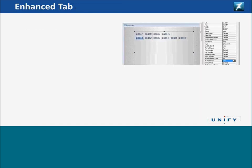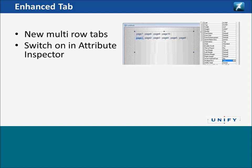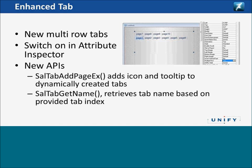The enhanced tab control allows multiple rows of tabs on a control, which you switch on in the attribute inspector. Two new APIs have been added — both requested on the forums. SaalTabAddPageX adds an icon and tooltip to a dynamically created tab page at runtime. SaalTabGetName allows you to retrieve the name of a tab based on the provided tab index, which makes the transition easier and aligns with how tabs worked in the past.